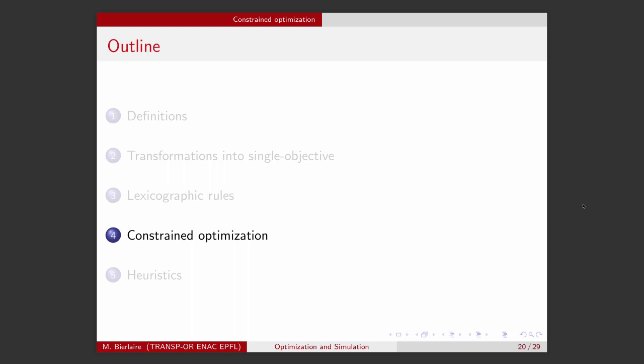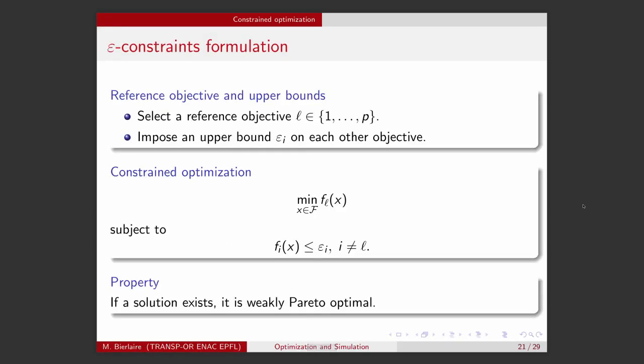It is not always easy to sort the objectives. And we introduce now a similar idea, but which is more general, and it's based on constraint optimization. The idea is that instead of sorting all the objectives, we just select one which we use as a reference. And for the others, we impose an upper bound on the objective function. It means that we transform our multi-objective optimization problem into an optimization problem with one single objective, which is the reference objective function, and several constraints that avoid the other objectives to go above a given value.